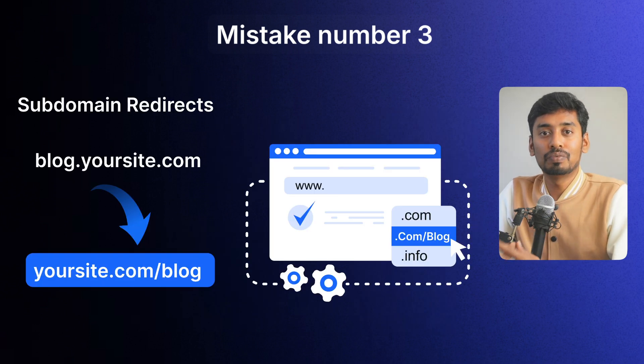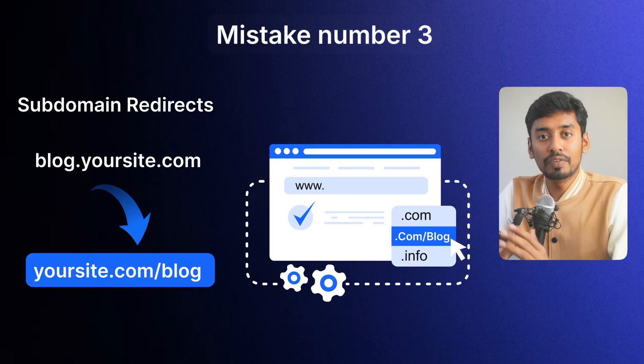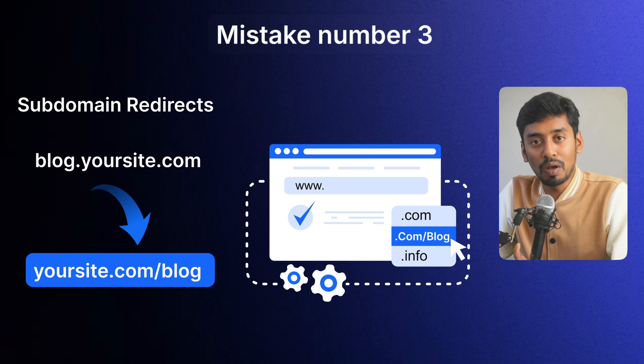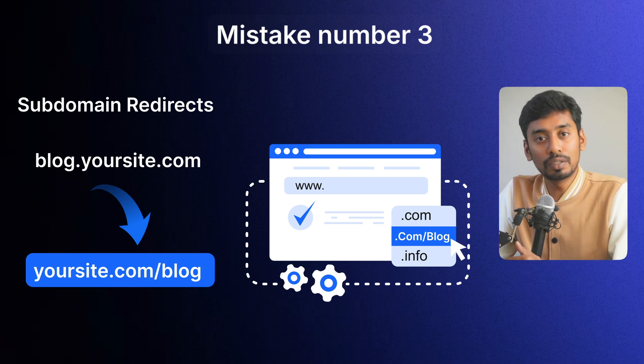Mistake number three: forgetting subdomain redirects. If you are moving from blog.yoursite.com to yoursite.com/blog, you need to set up redirects for that too. Subdomain redirects are mostly domain-level controls, which means you have to do proper domain forwarding from where you purchased the domain.